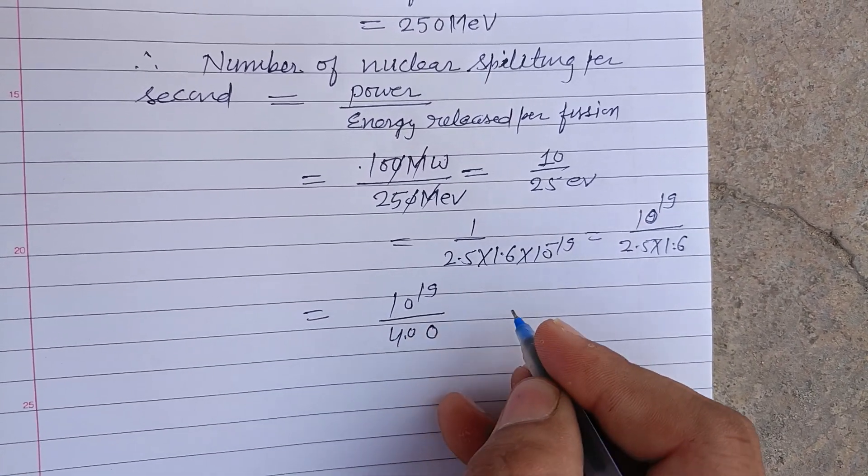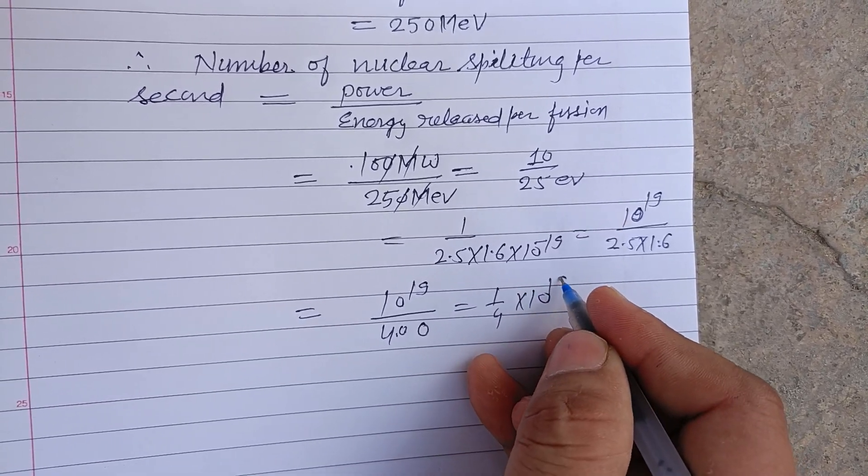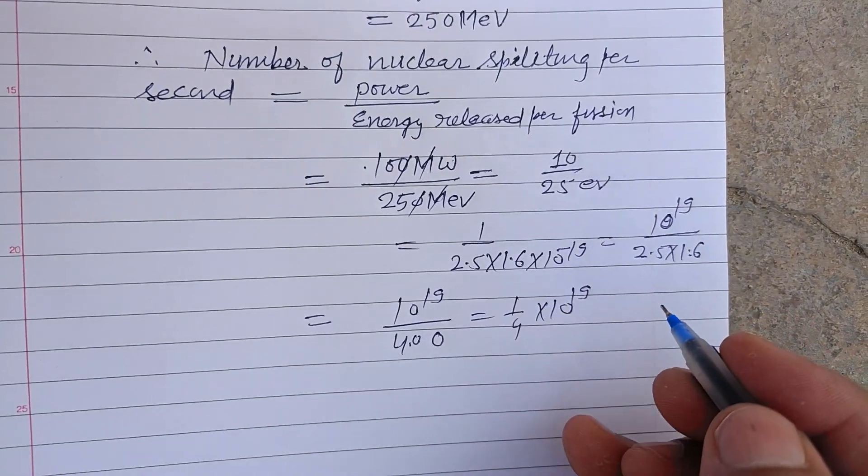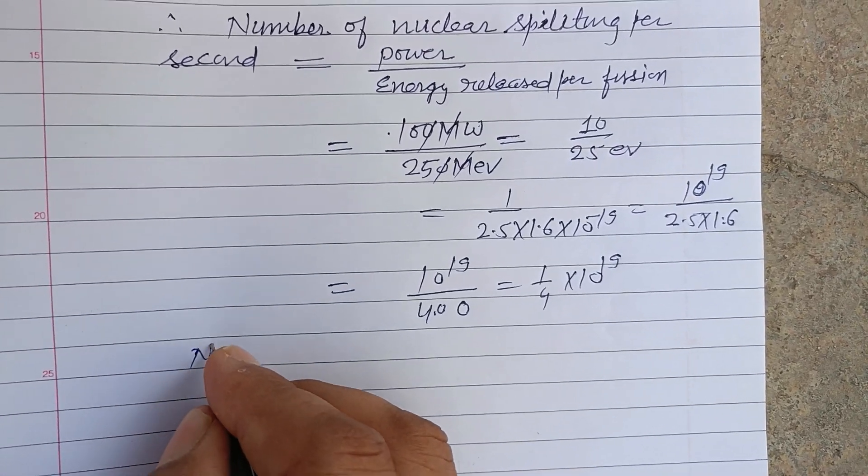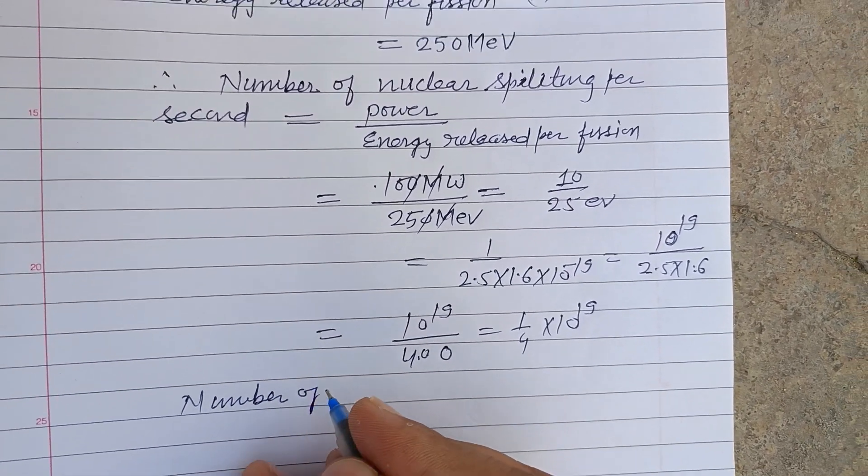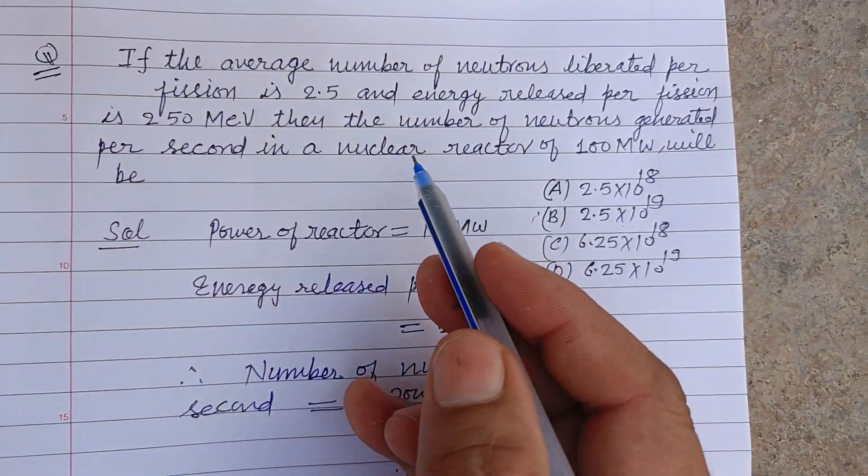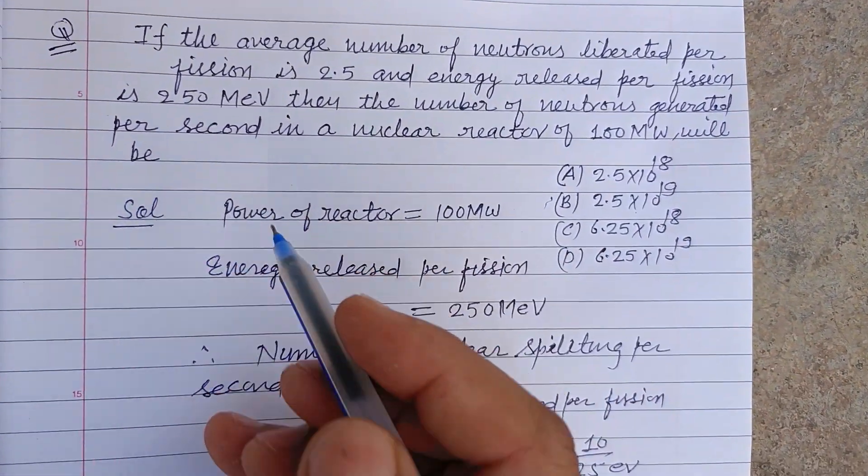so this is one upon four times 10 to the power 19. Number of neutrons generated per second